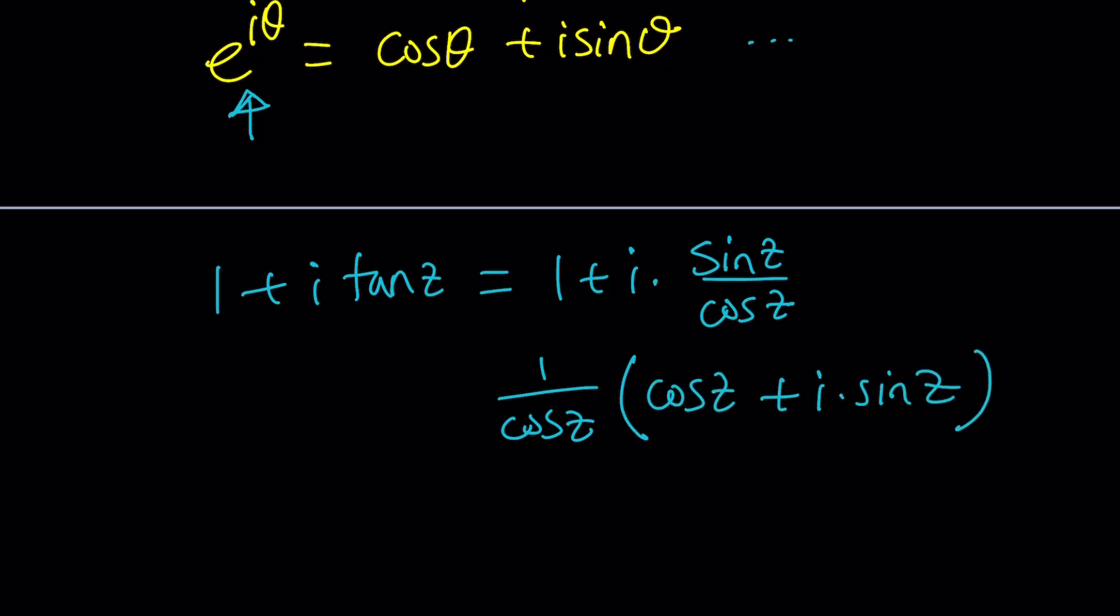Guess what this 1 over cosine z is? That is going to be the modulus, or R. And this is going to be our number. So yes, it's written a little differently with tangent, but it's actually the standard form or the polar form, but with an extra additional R.